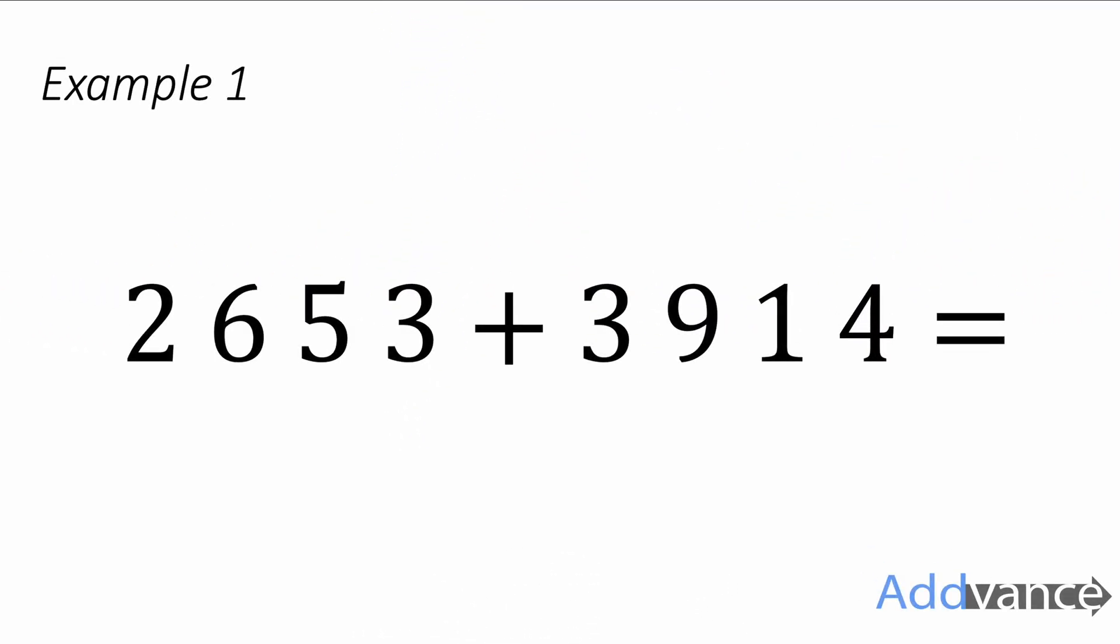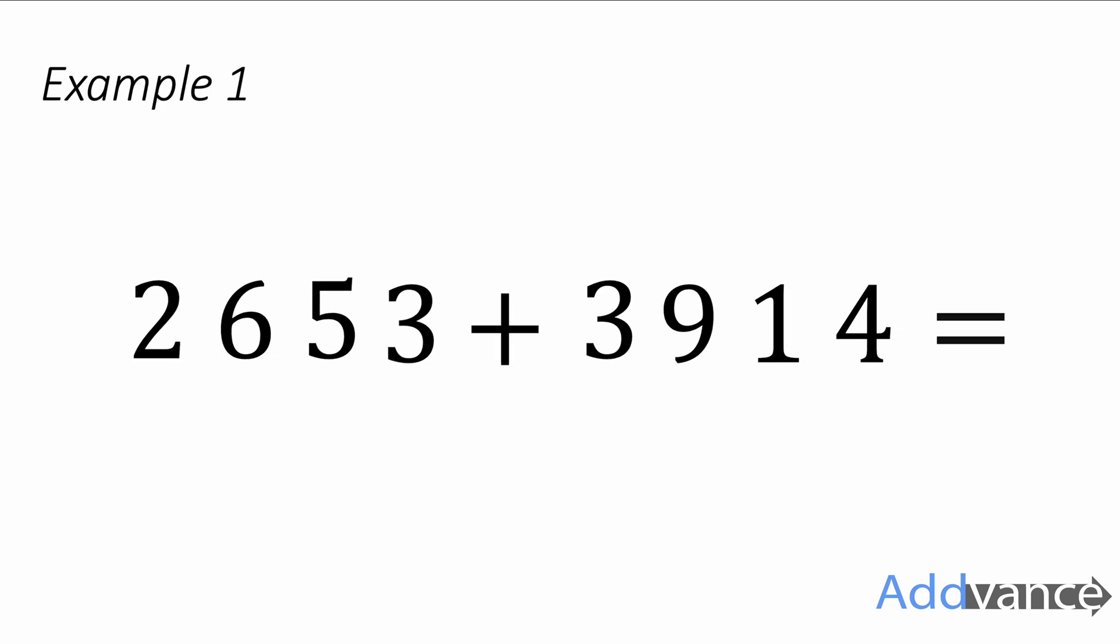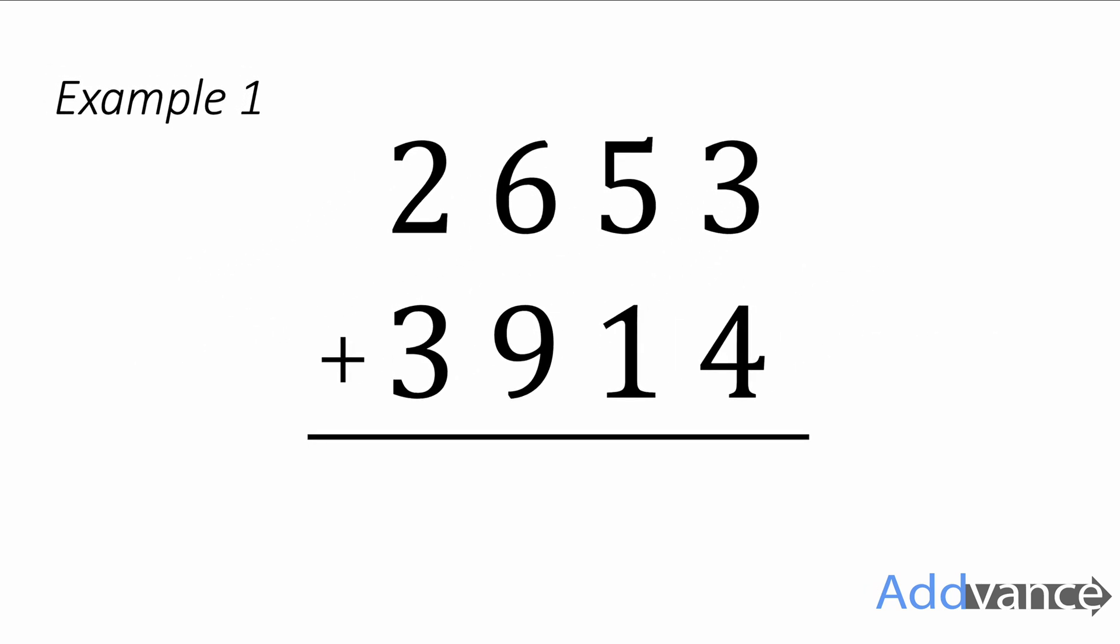Here we've got a four-digit number and a four-digit number and the best way to add this together is by using column addition. So I'm going to rewrite these two numbers so they look like this. So I've got the one number on the top, one number on the bottom and I've lined them up so that the place value is respected.